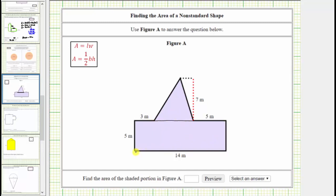Notice how this side has a length of 14 meters. This length must be the same as 3 meters plus the length of the base of the triangle plus 5 meters. And therefore, the base of the triangle has a length of 14 meters minus 3 meters minus 5 meters, which is 6 meters.